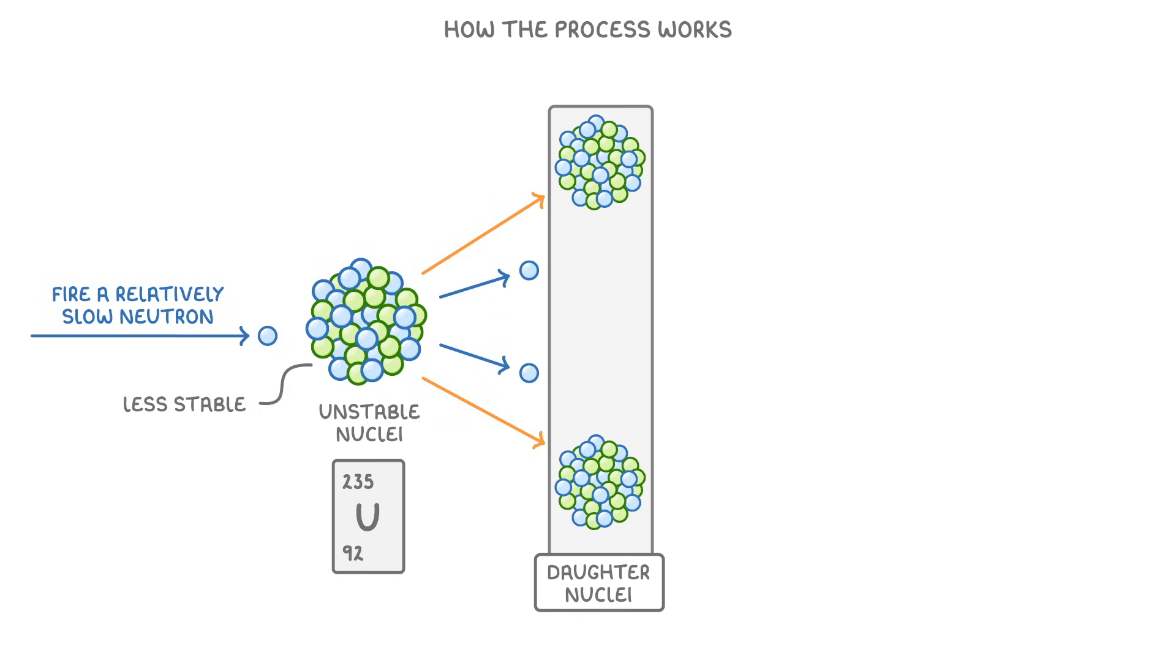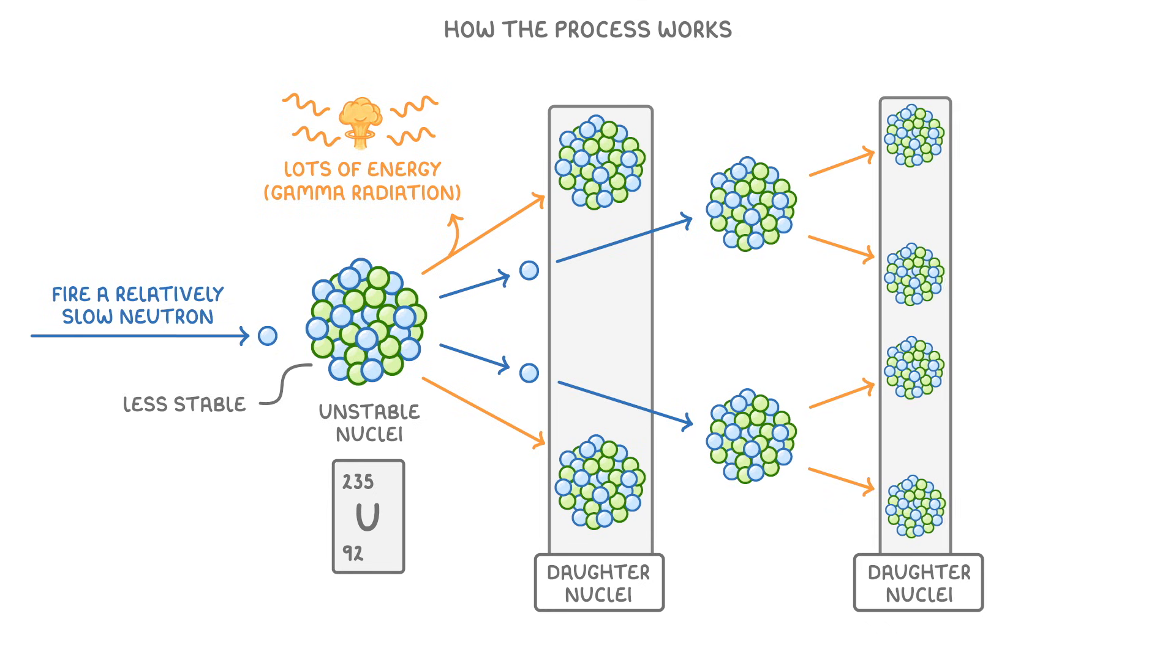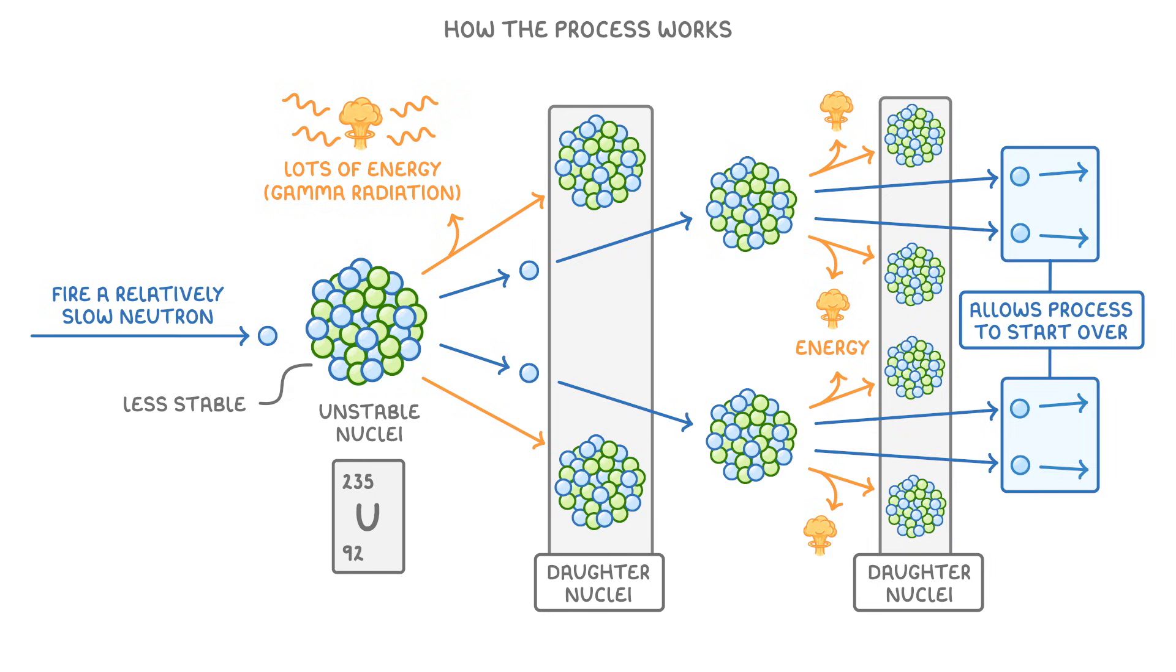It also releases two or three more neutrons and, importantly, loads of energy in the form of gamma radiation. Each of the neutrons can then go on to repeat the process all over again with another uranium nucleus. So more daughter nuclei, energy, and neutrons will be released, which again allows the process to start over.